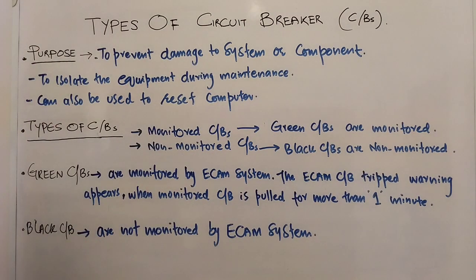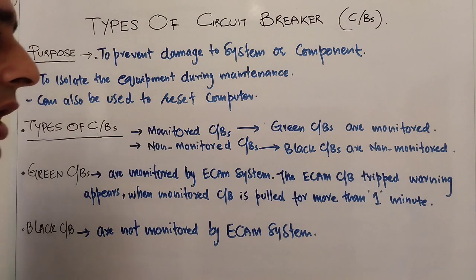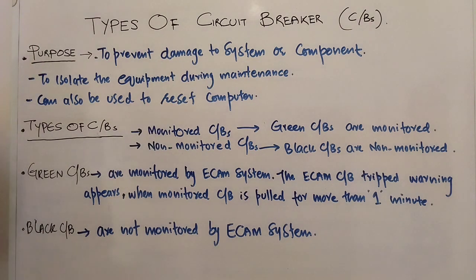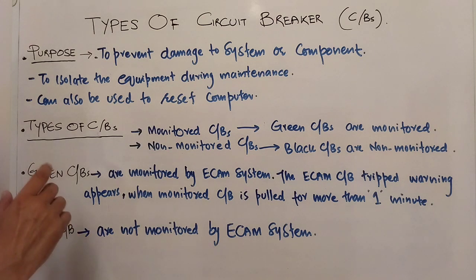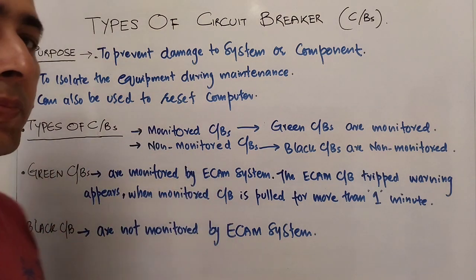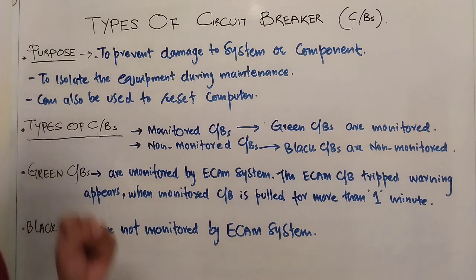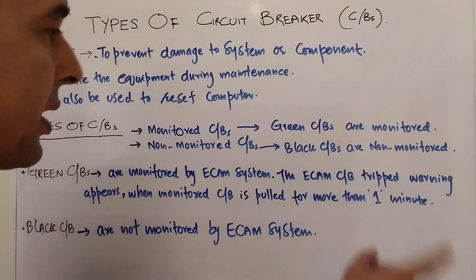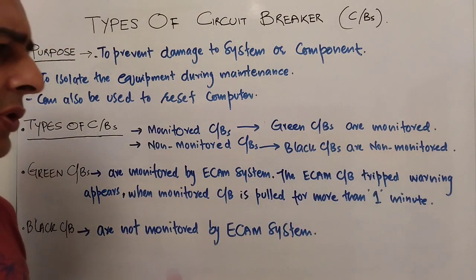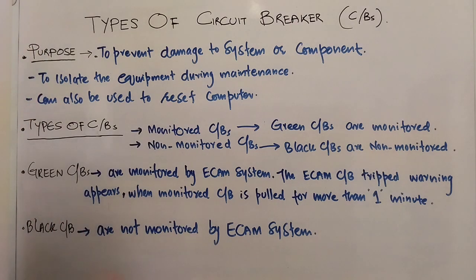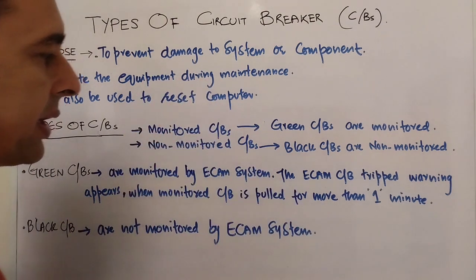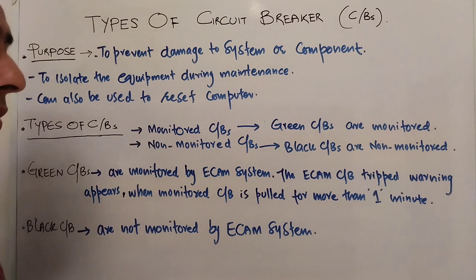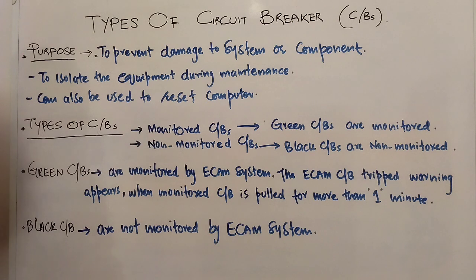When I talk about the A320 or A321, the green circuit breakers are monitored and the black circuit breakers are non-monitored. The green CBs are monitored by the ECAM system on the A321. When you see a green CB trip, you will see a warning message on the ECAM. The black CBs are non-monitored and do not generate an ECAM message.